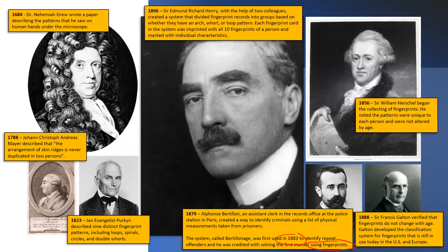In 1896, just another five or six years later, Sir Edmund Richard Henry, with the help of two other colleagues, created a system that divided fingerprint records into groups based on whether they have an arch, whorl, or loop — the three big classification groups for fingerprints. Each fingerprint card in the system was imprinted with all 10 fingerprints of a person and marked with individual characteristics. We call that a 10-card. You will actually do the 10-card in class, and there are future videos on how to print one.